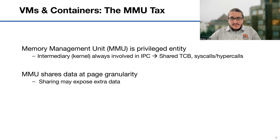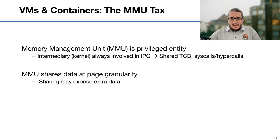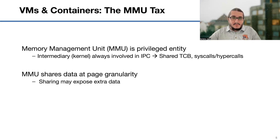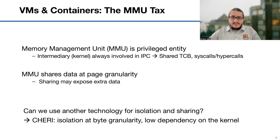One root cause of this problem is the memory management unit, which we use as a base technology for isolation and sharing. The MMU is a privileged entity, and if you want to manipulate pages and access memory in different address spaces, you must interact with the privileged intermediary — the kernel. The kernel is always involved in IPC, which leads to a large trusted computing base and expensive transition costs. Yes, the MMU allows us to share data between isolated entities, but only at page granularity. You must think carefully before remapping pages — what if you accidentally expose data that shouldn't be exposed?